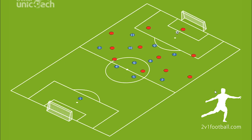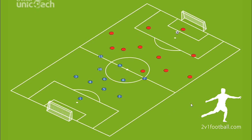The 4-3-3 formation is also great against opponents who want to play short passes from the goal kick, because it puts three players in the first line of attack and allows you to put a lot of pressure on them. This formation also allows you to very quickly switch your defensive block from 4-3-3 to 4-1-4-1 and 4-5-1.